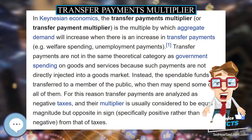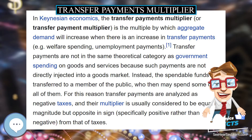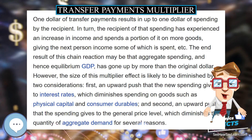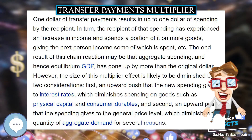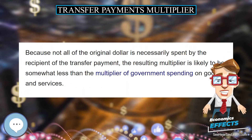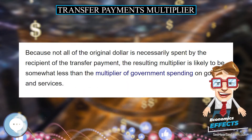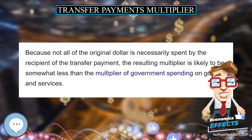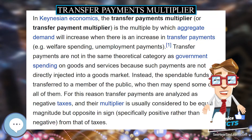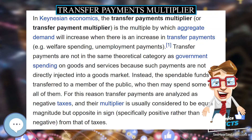Transfer Payments Multiplier. In Keynesian economics, the Transfer Payments Multiplier, or Transfer Payment Multiplier, is the multiple by which aggregate demand will increase when there is an increase in transfer payments, for example welfare spending or unemployment payments.